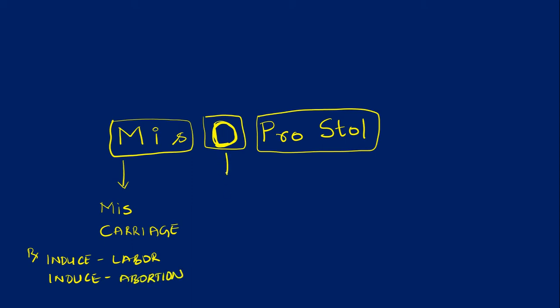O stands for it opens the patent ductus arteriosus in newborns. You can use alprostadil which is a PGE1 analog.